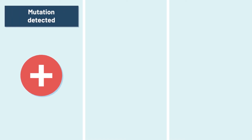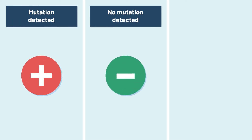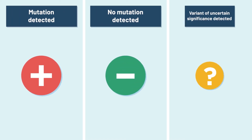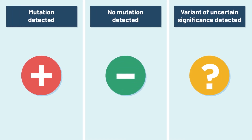There are three possible results of your genetic test: mutation detected, no mutation detected, or variant of uncertain significance detected. This video will describe these results in more detail.